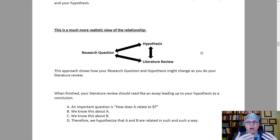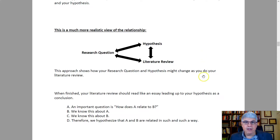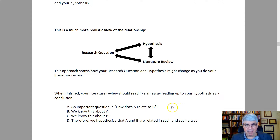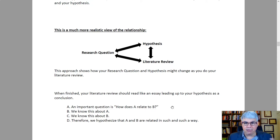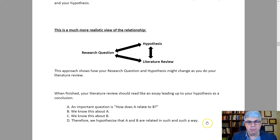When all is done and you've completed your literature review — you've read everything, figured out your research question, and formed your hypothesis — you'll end up with an essay for your literature review leading up to your hypothesis. The structure might look like: 'An important question is how does A relate to B? We know this about A, we know this about B, therefore we hypothesize that A and B are related in such and such a way.' So the lit review identifies the main variables, discusses what we know about them, and then makes an argument leading to the hypothesis.